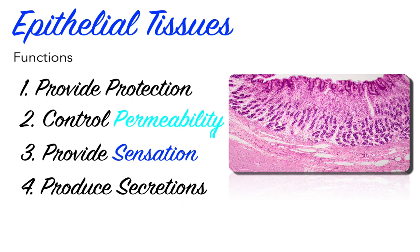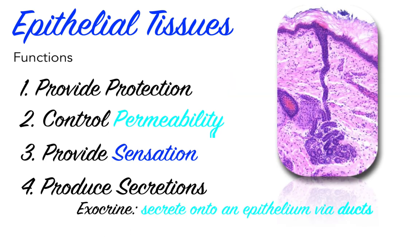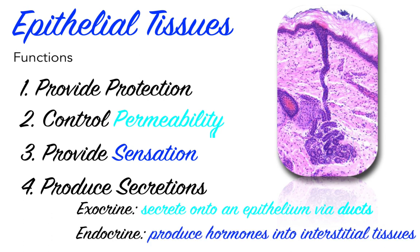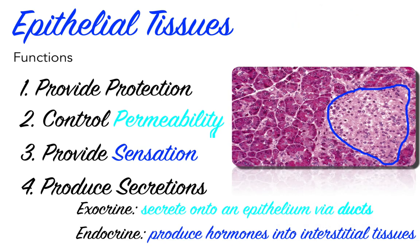For now, secretions are broadly classified according to where they are discharged. Exocrine secretions are discharged onto the surface of the epithelium — examples include enzymes that enter the digestive tract, perspiration on the skin, and milk produced by mammary glands. Endocrine secretions, on the other hand, are released into the surrounding tissue, interstitial fluid, and blood. These secretions, called hormones, act as chemical messengers and regulate or coordinate the activities of other tissues, organs, and organ systems.